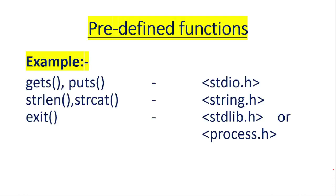Some examples of predefined functions are gets and puts. These are predefined functions stored in the header file stdio.h. The second ones are strlen and strcat — a number of functions are also there for strings, and these functions are stored in the string.h header file.